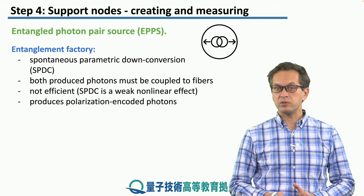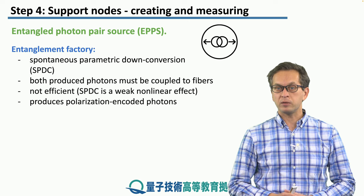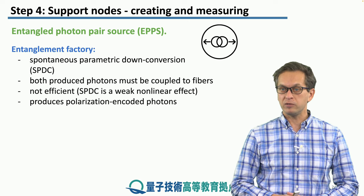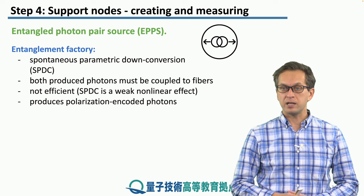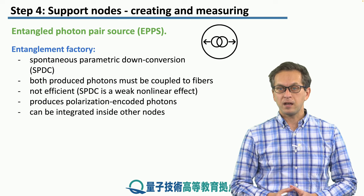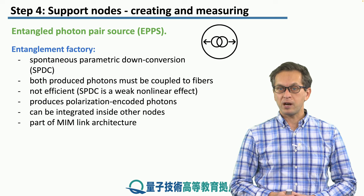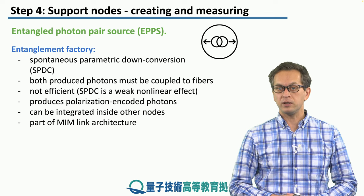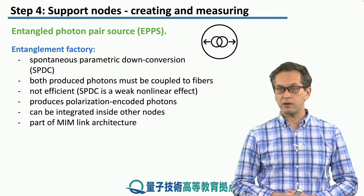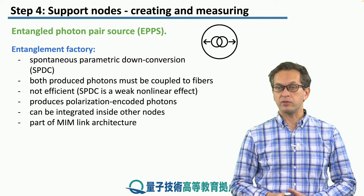SPDC produces polarization-encoded photons. If you recall, we talked about polarization encoding for photons as well as time-bin encoding. This node can also be integrated inside other nodes if need be. We encountered this node already when we were discussing link architectures — specifically the MIM link architecture, or Memory-Interface-Memory.